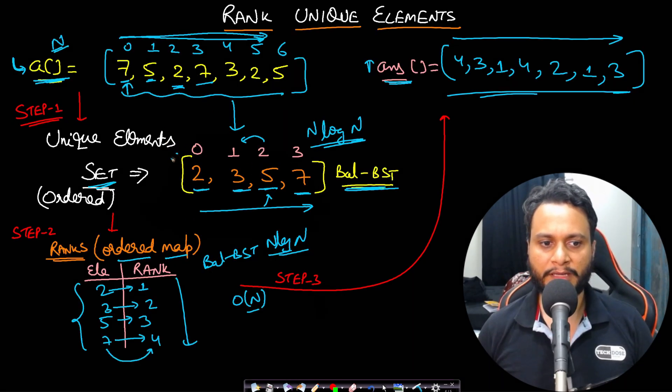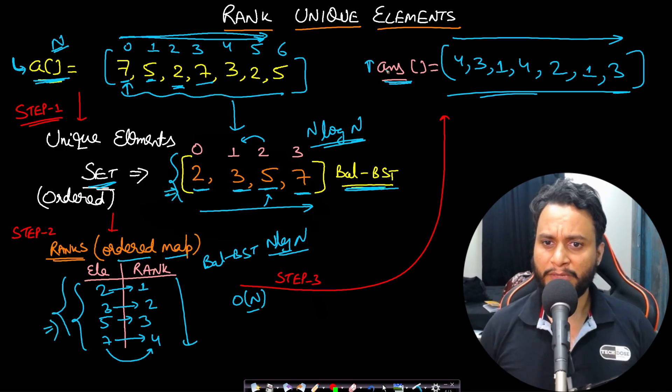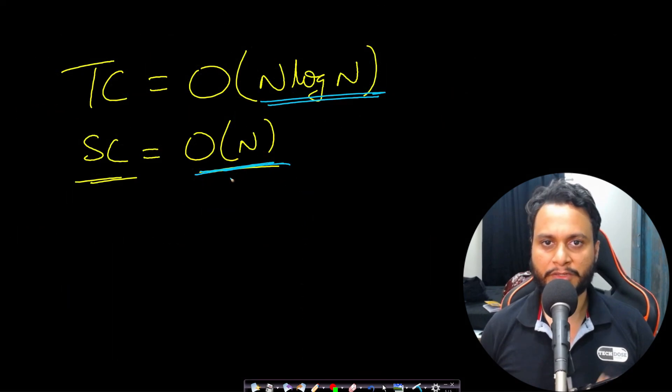And if you consider the space complexity, then we are taking an extra space for the set, extra space for the ranks. We may leave the extra space for answer because this is contained in the return type. So I will say it is order of N because N is the size of the set and the map. So that is why the space complexity is order of N.